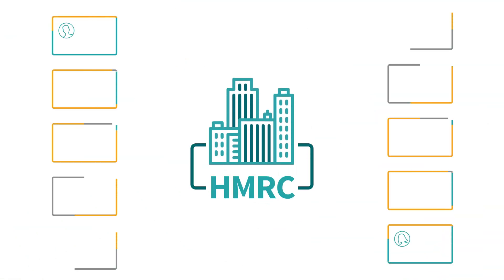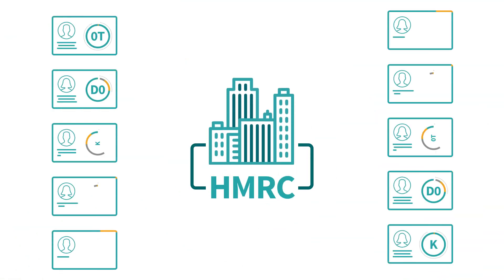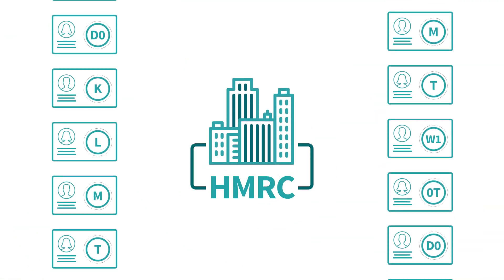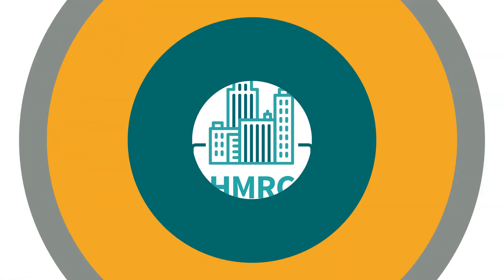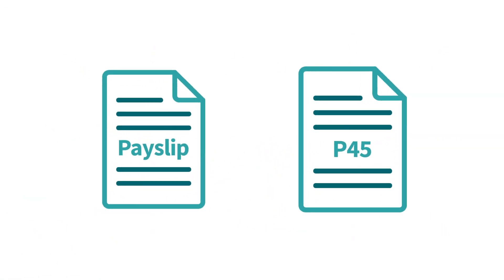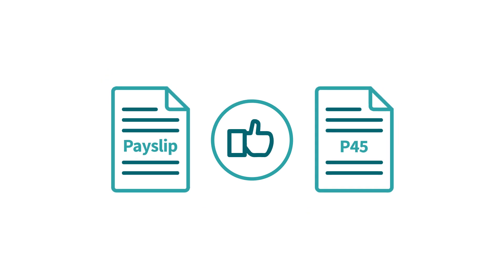HMRC uses tax codes to determine the amount of tax you need to pay, and you can find yours on your payslip or on your P45. Straightforward, right? But what exactly do the letters in each code mean?